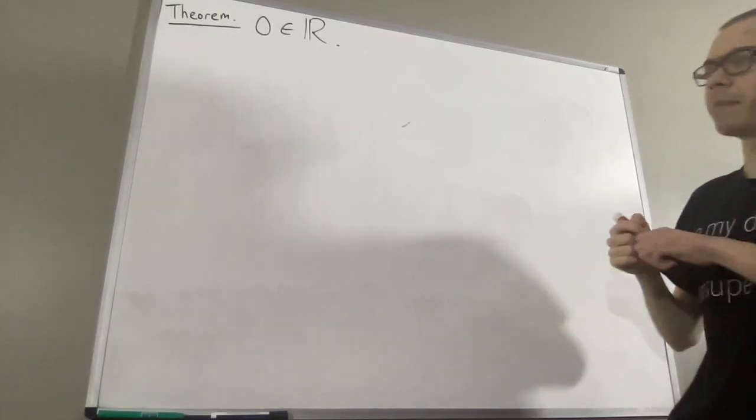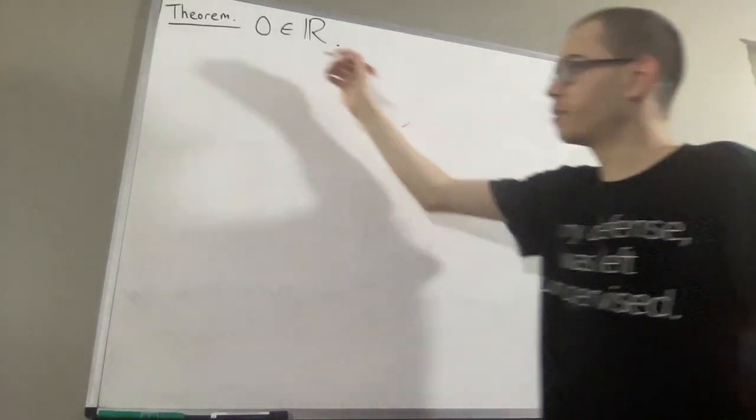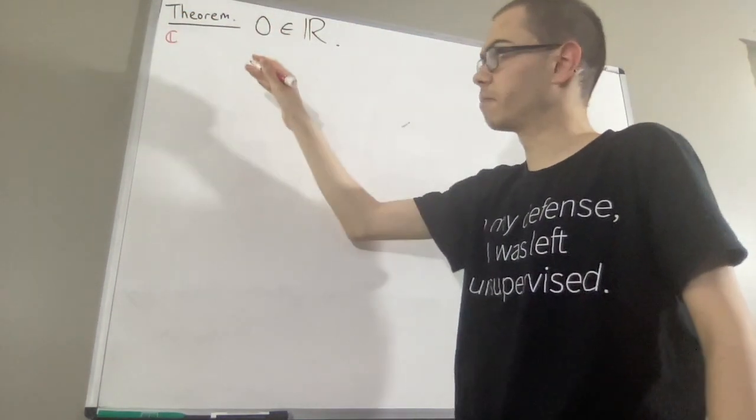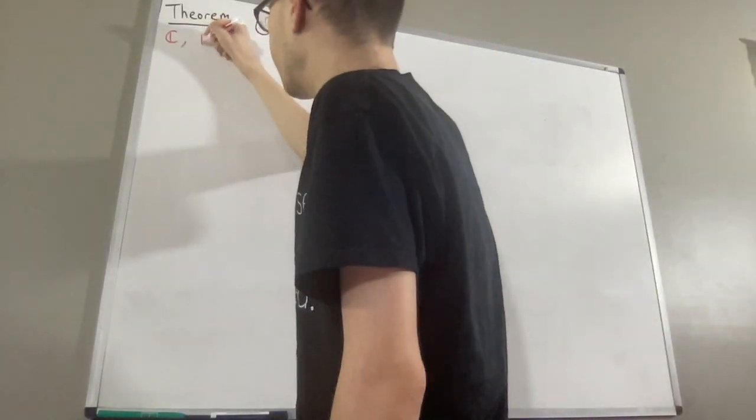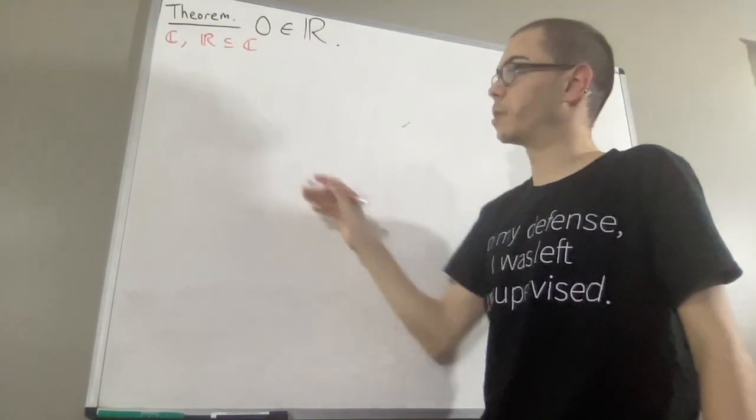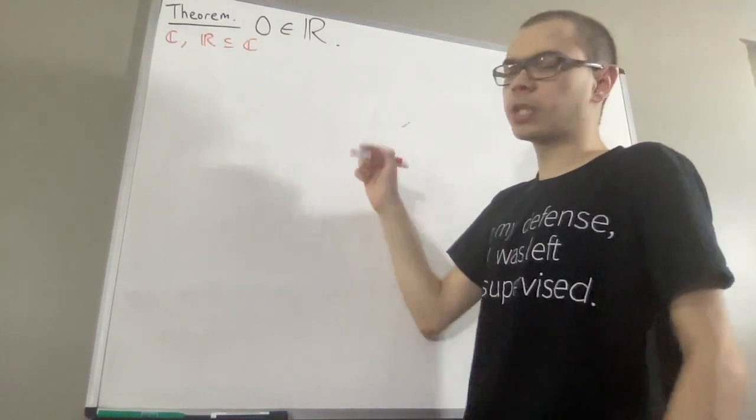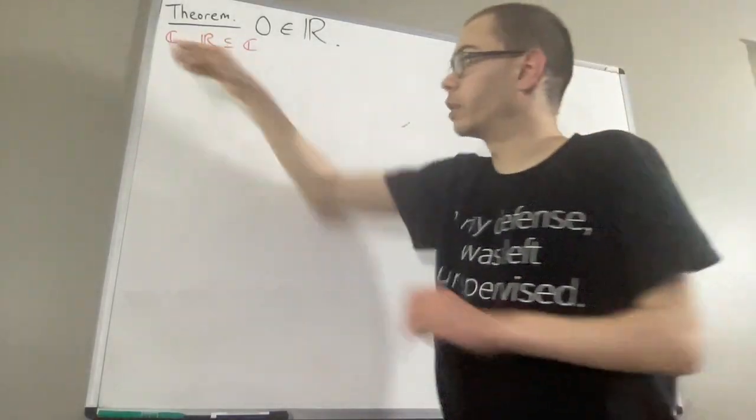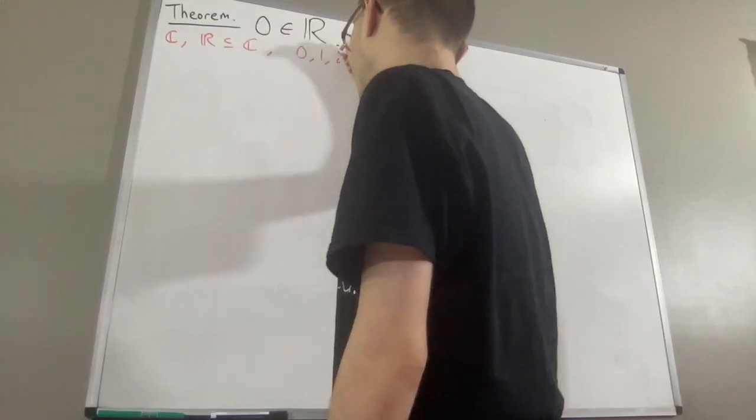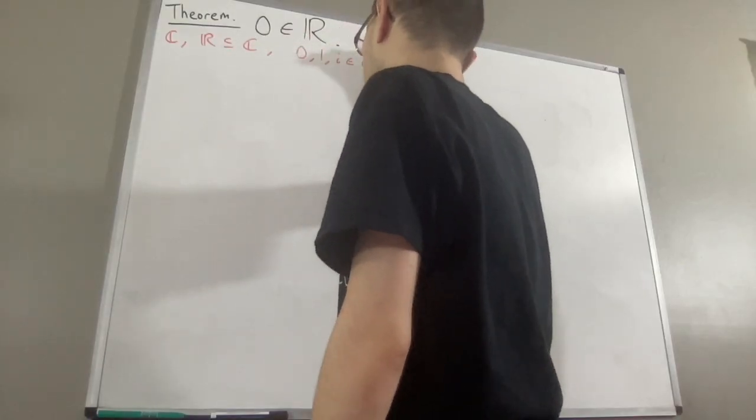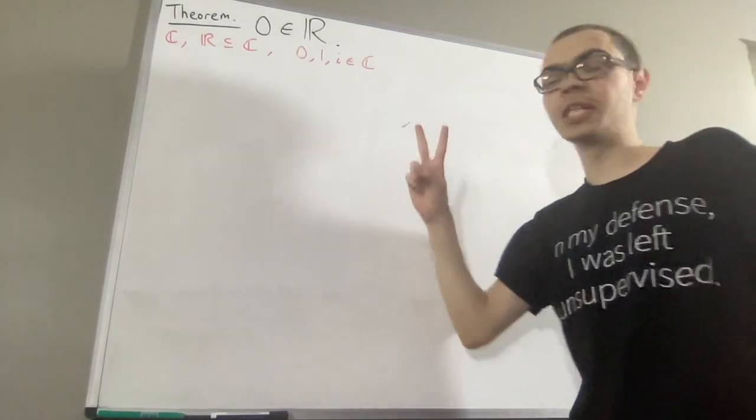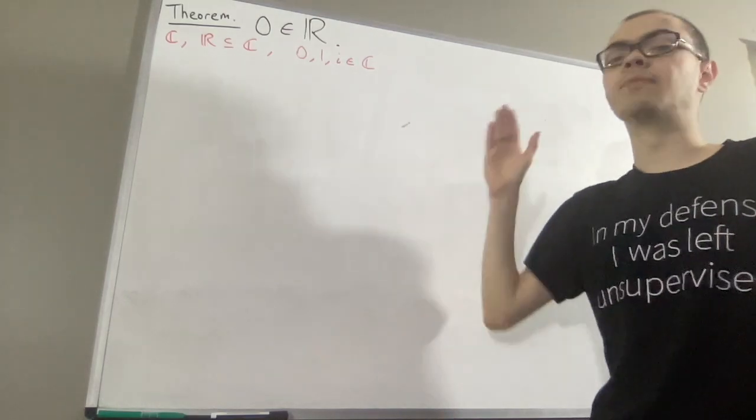Now, in this series, we are looking at a list of axioms for the complex numbers. These axioms come from MetaMath, and I'll leave a link in the description below for more information. What's pretty much happening is we are given a set C, called the set of complex numbers. We're also given a subset of C, R, which is called the set of real numbers. And we're given three elements of the complex numbers, namely, we're given 0, 1, and I. We're also given two binary operations on the complex numbers, addition and multiplication.